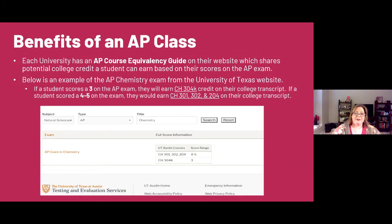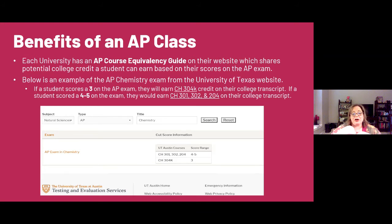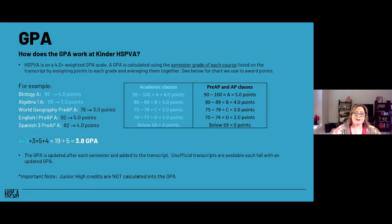Here's an example from the University of Texas website showing AP credit awards: if a student scores a 3 on an exam, UT will award credit for a specific course — for example, CH 304K. If you score a 4 or 5, they award additional credits. So your score determines the number of college hours they give you.